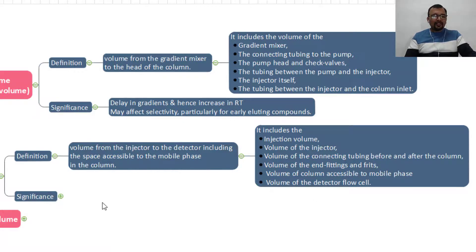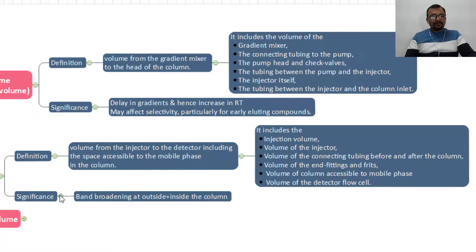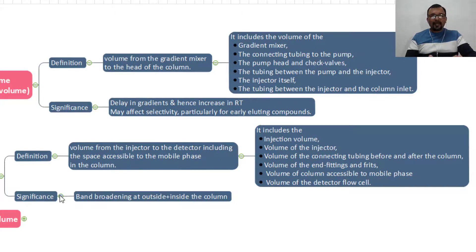The significance of void volume is that it causes band broadening both outside and inside the column. You cannot avoid void volume because you have to connect the injector with the column and then the column to the detector — you cannot have a system with zero void volume. The void volume causes band broadening of the compound; the greater the void volume, the bigger the band broadening, resulting in poor resolution, poor response, and poor peak shape. It is very important to keep your void volume as low as possible.